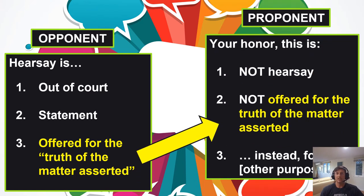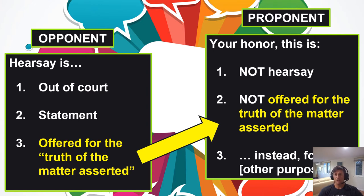Oftentimes the response turns on that third element — the most controversial element: what is my purpose for doing this? One of the elements the opponent objects to is that you're doing something for the wrong reasons. So as the proponent, I'm going to say: I'm not doing it for any bad purpose; I'm doing it for some other purpose. Your honor, this is not hearsay — those are the first words out of my mouth. They're saying it meets the definition; I'm saying it doesn't, because I'm not offering it for the truth of the matter asserted. Instead, I'm offering it for some other purpose.